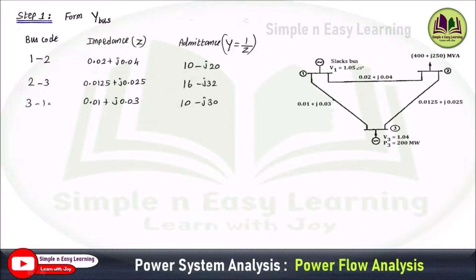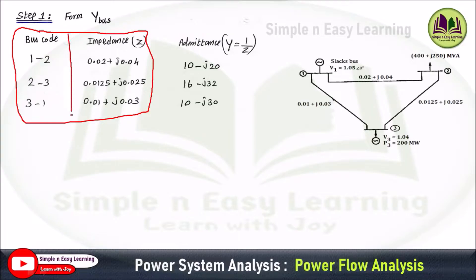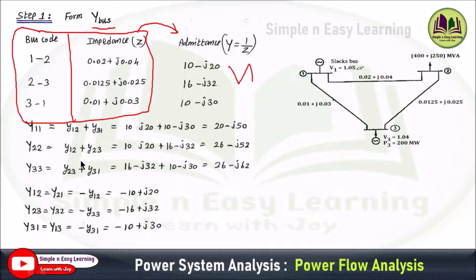Step 1: form the Y bus. The bus code and impedance in per unit are specified in the problem. We form the admittance matrix by converting impedance to admittance using Y equals 1 divided by Z. You will get the admittance values. Now form the Y bus matrix with diagonal and off-diagonal elements. Y11 equals the sum of admittances of lines connected to bus 1, that is Y12 and Y13 added together, giving 20 minus J50.